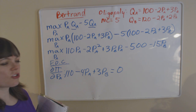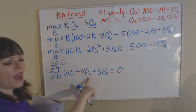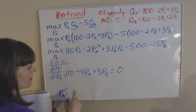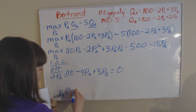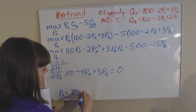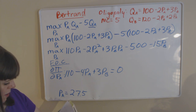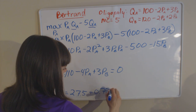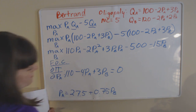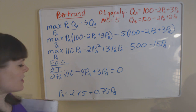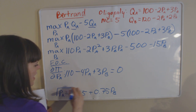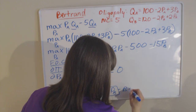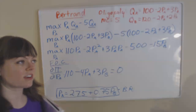We can simplify that first order condition by solving for PA, since this is firm A's problem. When you simplify that, you get the best response function: PA equals 27.5 plus (3/4)·PB. That's firm A's best response to B — that's one of our two best response functions.